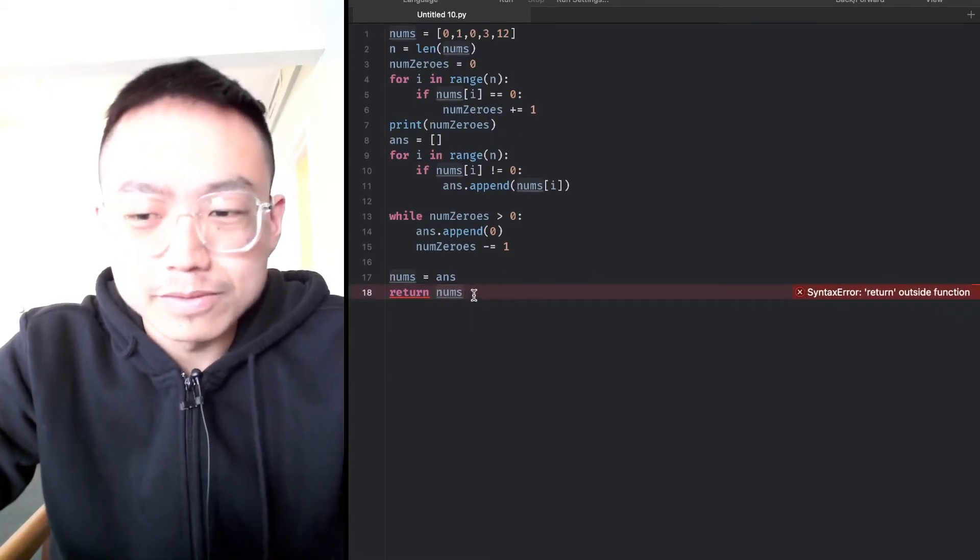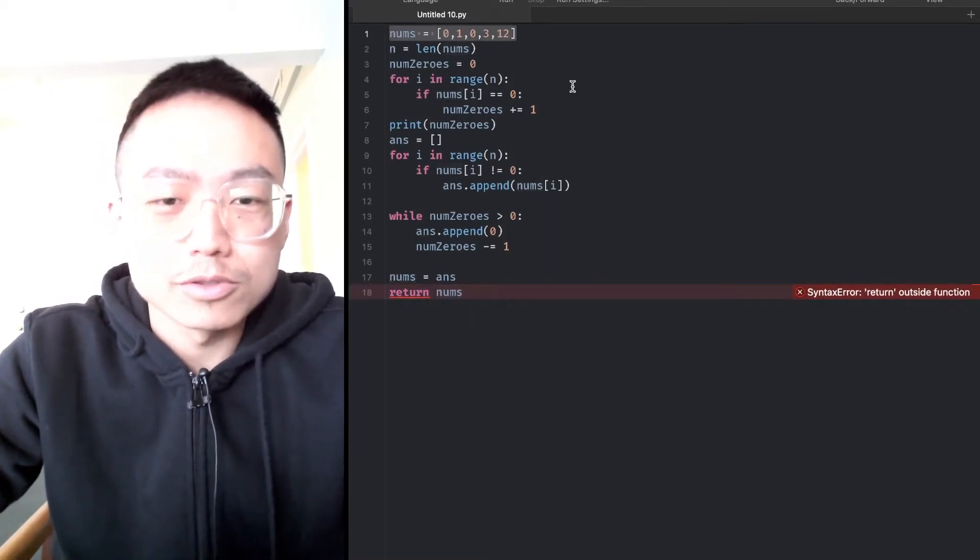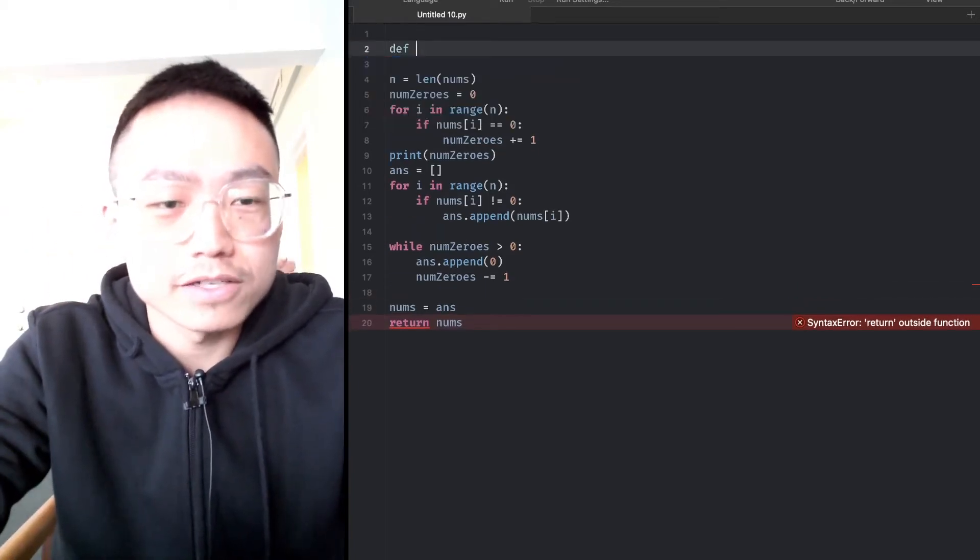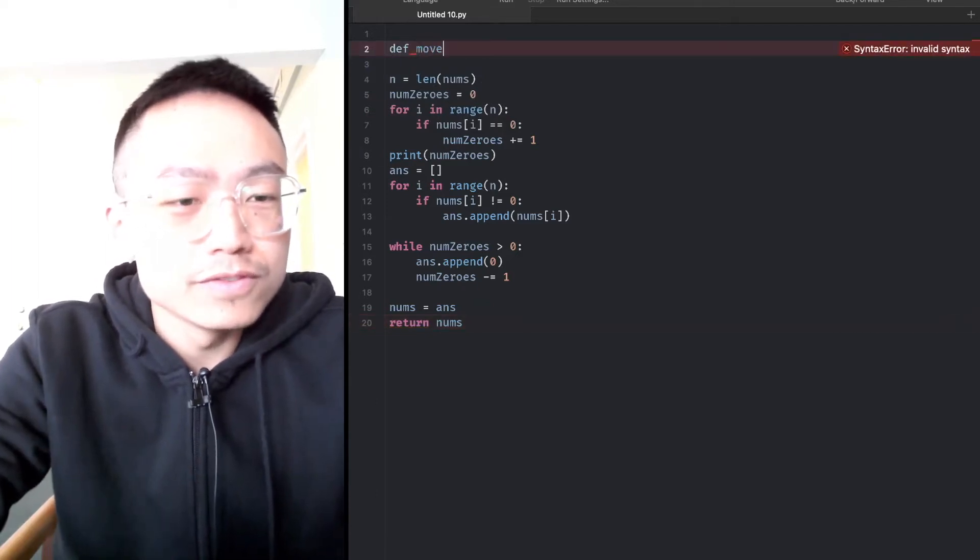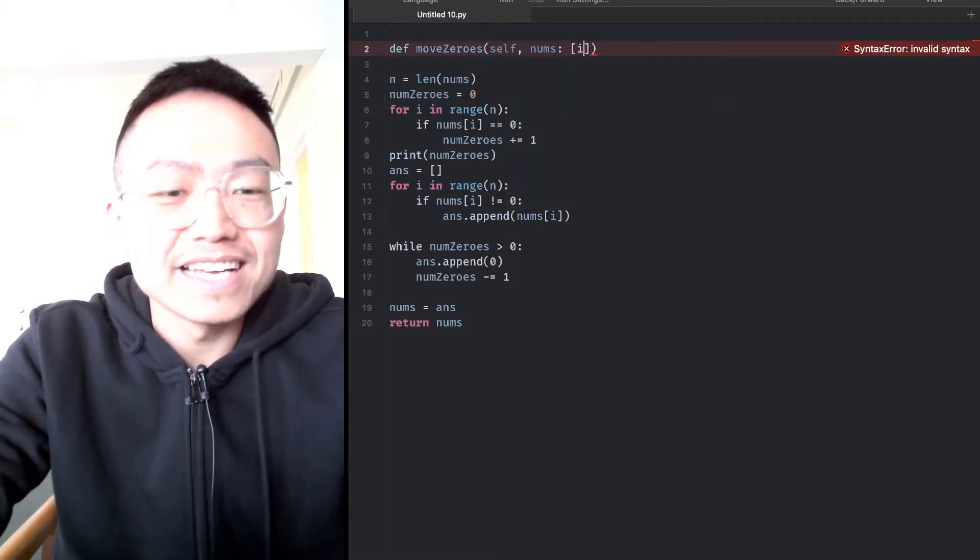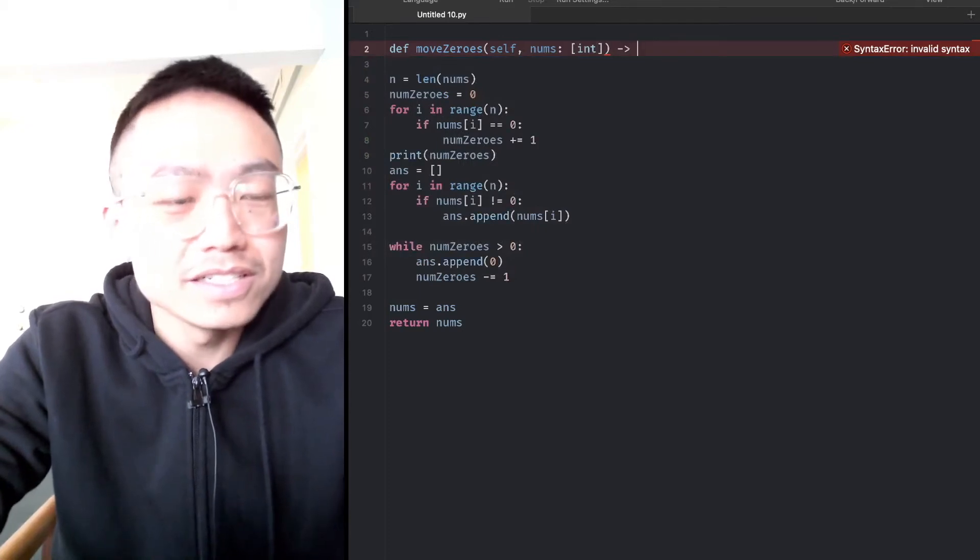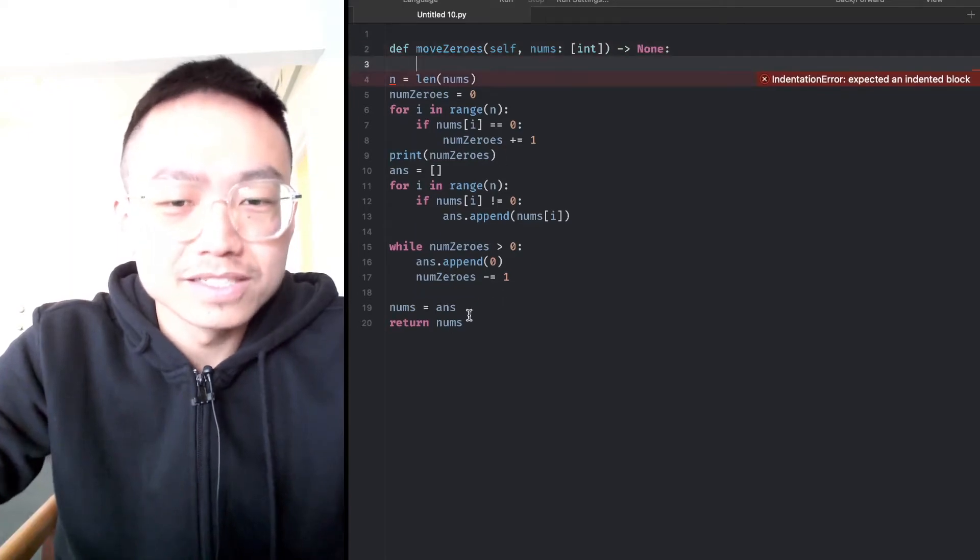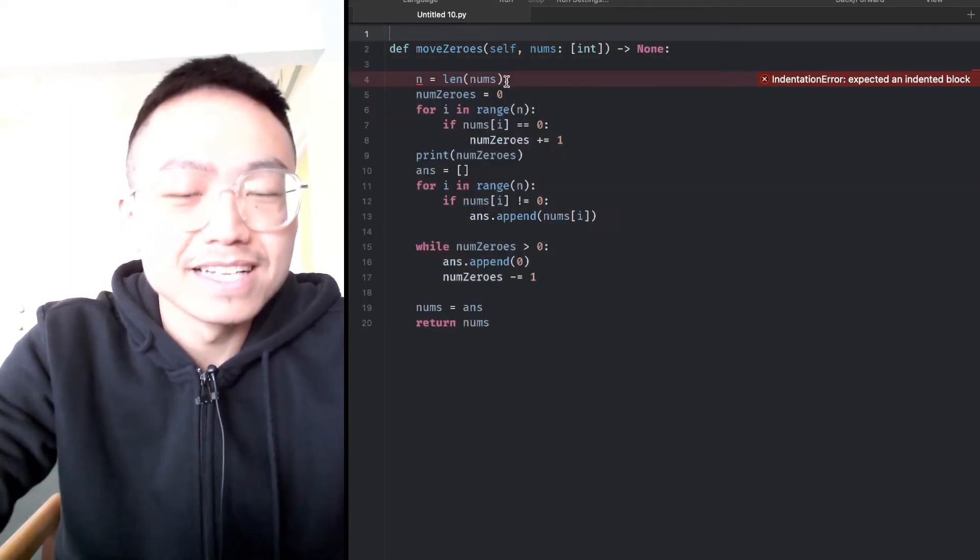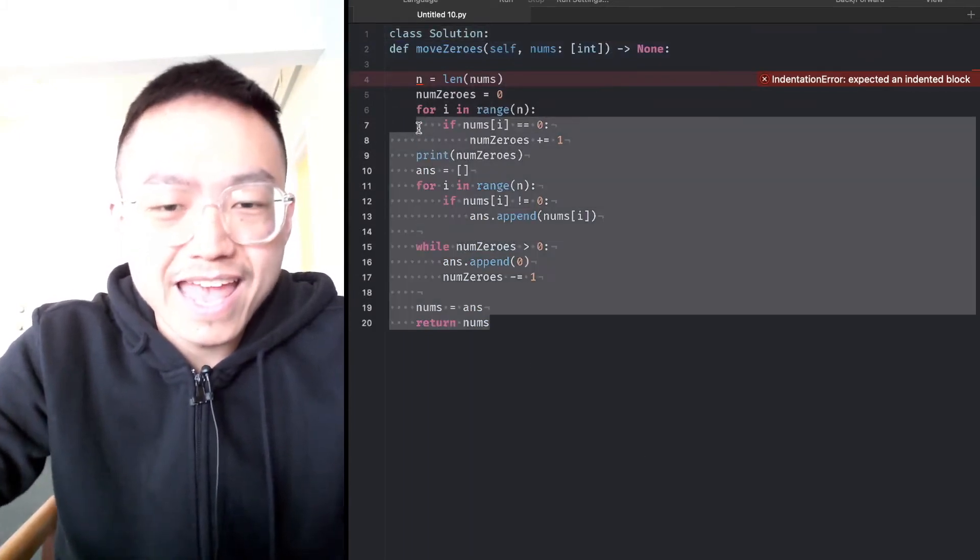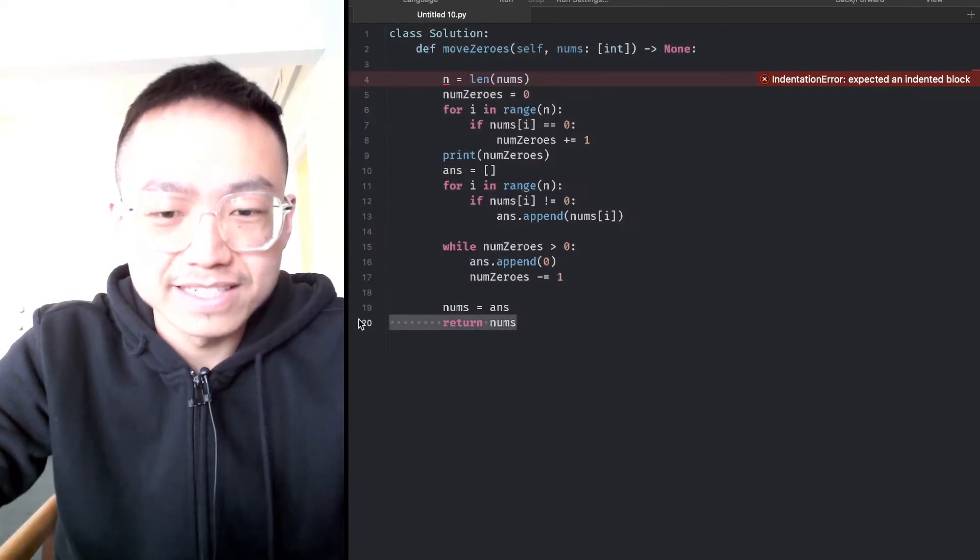We need to define a function. Move zeros, self, nums as an integer list, and return none. We set this into the function and class solution.